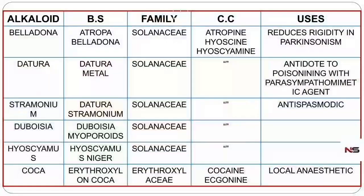To summarize: all the biological sources, families, chemical constituents, and uses are important. Except coca, all tropene alkaloids come under the Solanaceae family; coca belongs to Erythroxylaceae. Coca is used as a local anesthetic; all others are used as antispasmodics, as antidotes for parasympathomimetic poisoning, and for reducing rigidity in Parkinsonism.